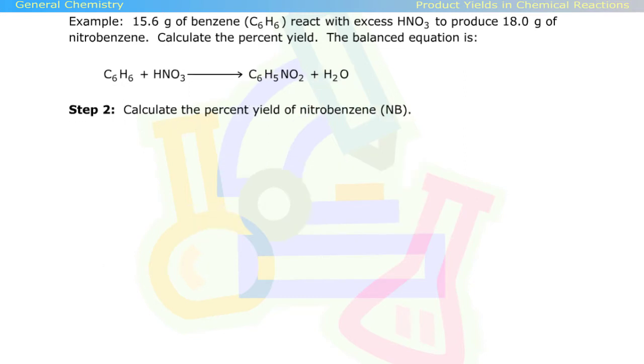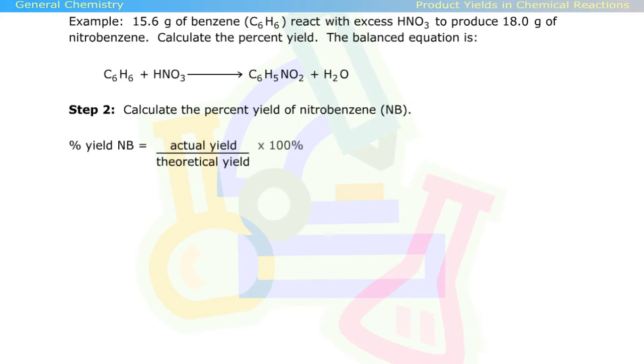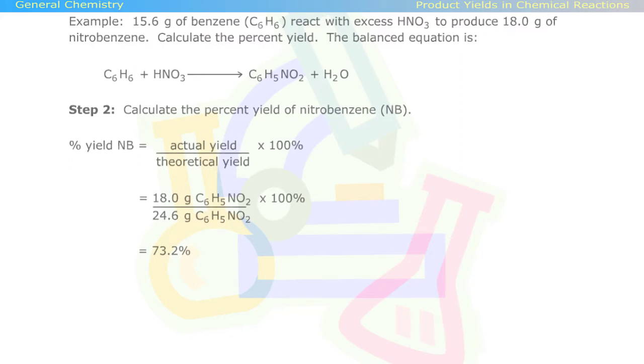Step two: Calculate the percent yield of nitrobenzene. Our percent yield is 73.2 percent. Here's a question.